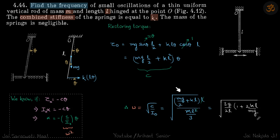C is this, I of this rod about O is ML² by 3, which gives our answer. All right. Thank you.